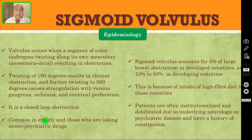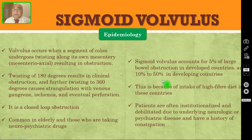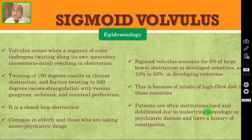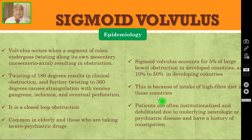This is common in elderly people and those who are taking neuropsychiatric drugs. Sigmoid volvulus accounts for 5% of large bowel obstruction in developed countries, whereas it is 10 to 15% in developing countries. This is because of high intake of high fiber diet in these developing countries. Patients are often already admitted in the hospital, debilitated due to either an underlying neurological problem or psychiatric disease, and they also have a history of constipation.